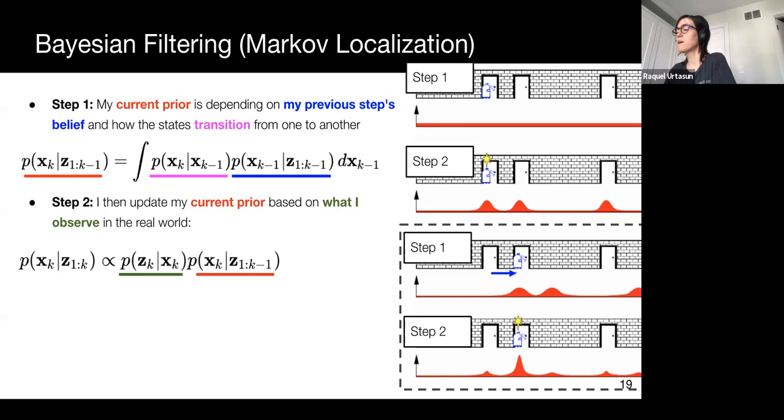The second step updates the prediction from the past step based on the current observation. This is what integrates new observations from our sensors into our belief.